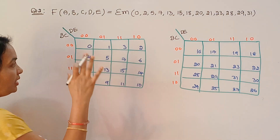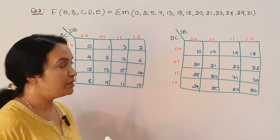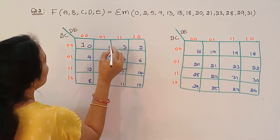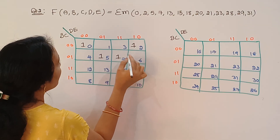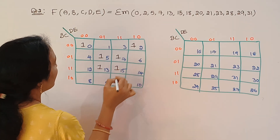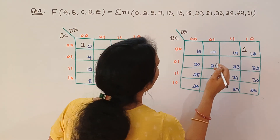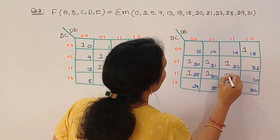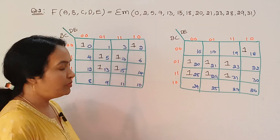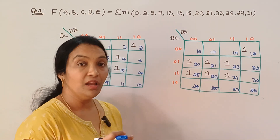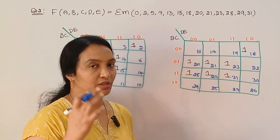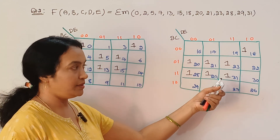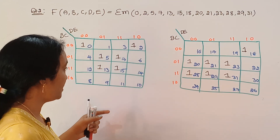Second problem: variables A, B, C, D, E — minterms are given. Grey code locations used. Inserting 1s at: 0, 2, 5, 7, 13, 15, 18, 20, 21, 23, 28, 29, 31. Now grouping: either 2, 4, 8, 16, or 32. 32 grouping: no. Coming to 16 — no. At least 8 ones possible.